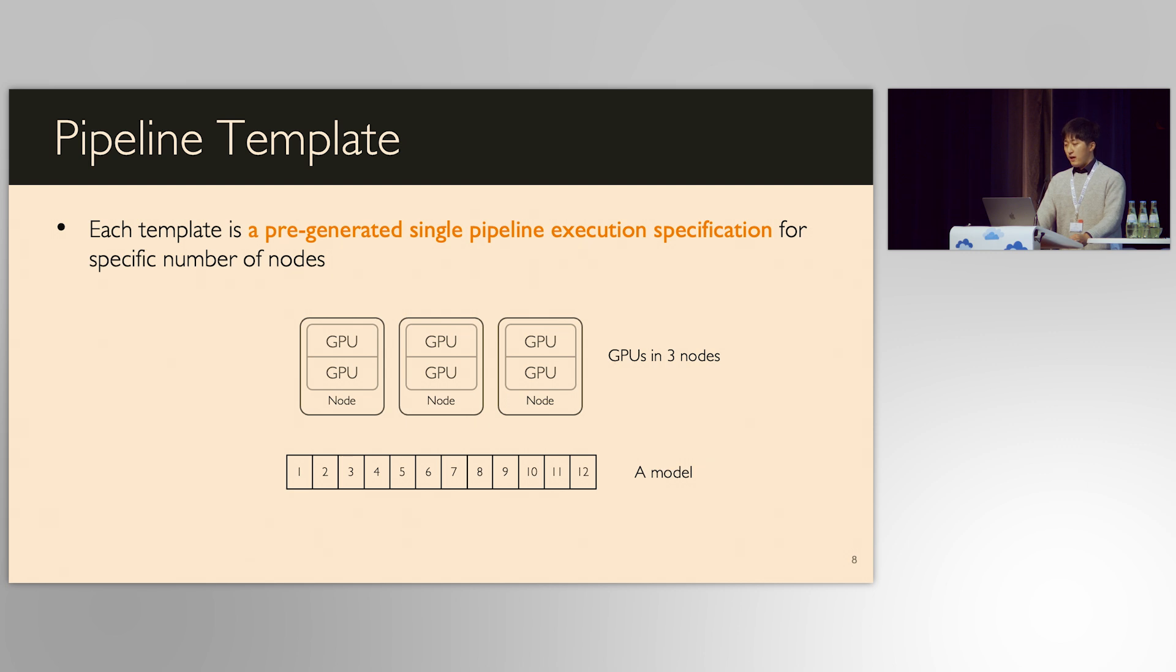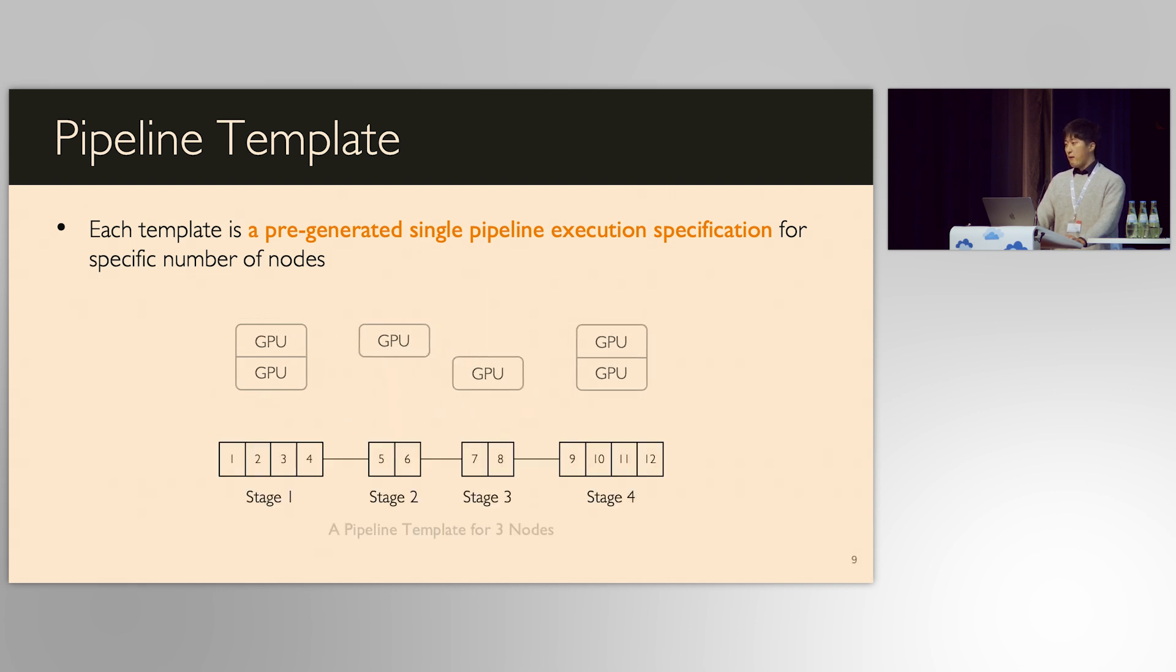Ooblack introduces the core concept of pipeline template for the first time. A single pipeline template is a specification of a single pipeline execution of a model given a specific number of nodes. We analyze which way of partitioning GPUs and model layers would provide the best throughput and map each pair to create pipeline stages to form a pipeline. After generating the specification, it's used again and again to instantiate pipelines for training.